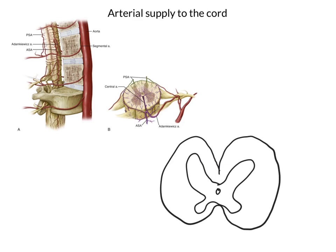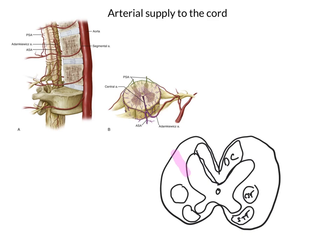Now let's draw some important tracts on. Here are the lateral corticospinal tracts - we'll label that CST. The spinothalamic tracts here, labelled STT. And the dorsal columns here, labelled DC. This is important because the different tracts fall under the territories of different spinal arteries. To represent the territory of the anterior spinal artery, we'll fill in the anterior two-thirds of the cord - this is the anterior spinal artery territory.